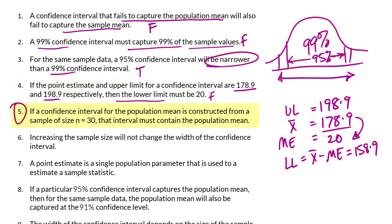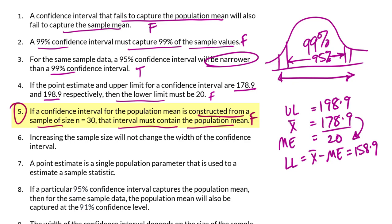Number 5: If a confidence interval for a population mean is constructed from a sample of size 30, that interval must contain the population mean. That is a false statement. The size 30 is referring to the central limit theorem, which states that if the sample size is large, the distribution of sample means will be approximately normal. It does not say anything about containing the population mean.